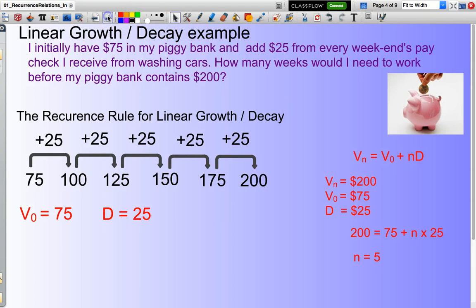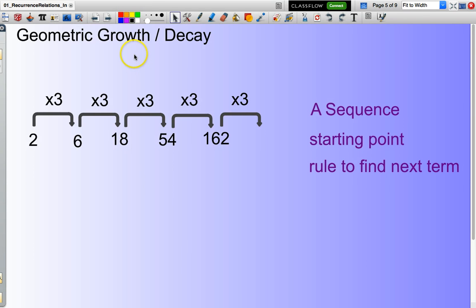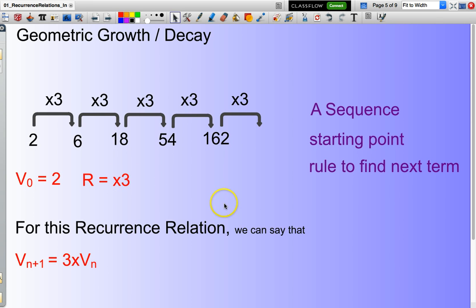Now geometric growth is where we're increasing not by adding but by multiplying. So again consider the starting point. I start, my initial value is 2. And how do I go from one term to the next? What's the rule? I multiply by 3. And we can say that for this recurrence relation the value of my next term equals 3 times the value of my current term. So in other words if my current term is 6, the value of my next term would be 3 times my current term.